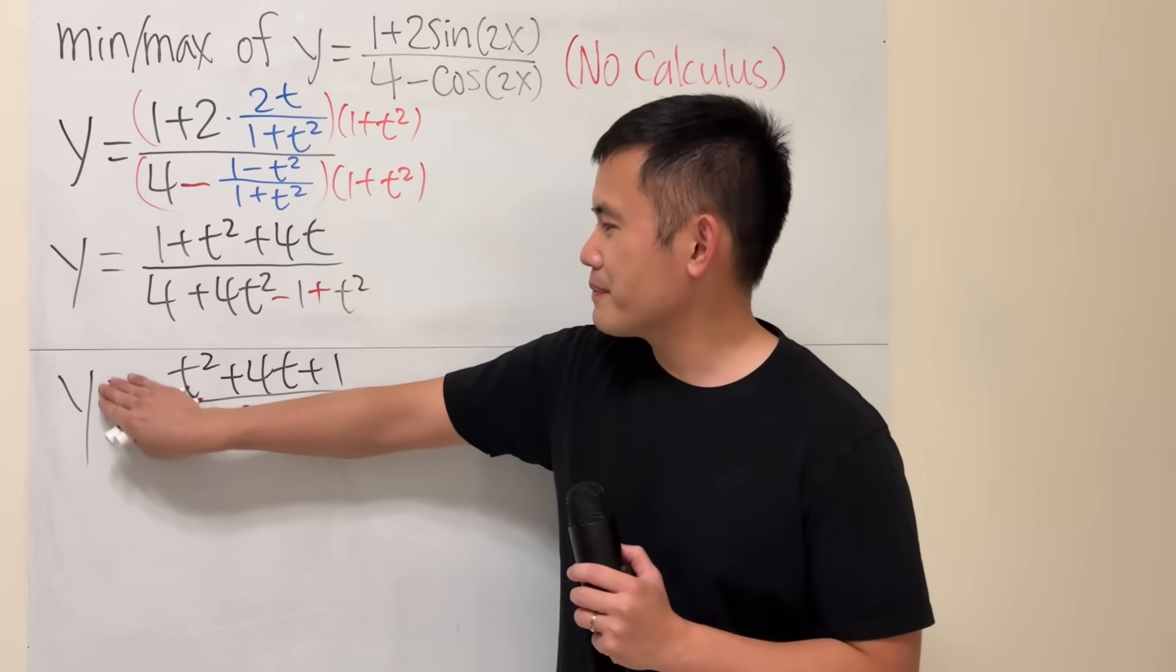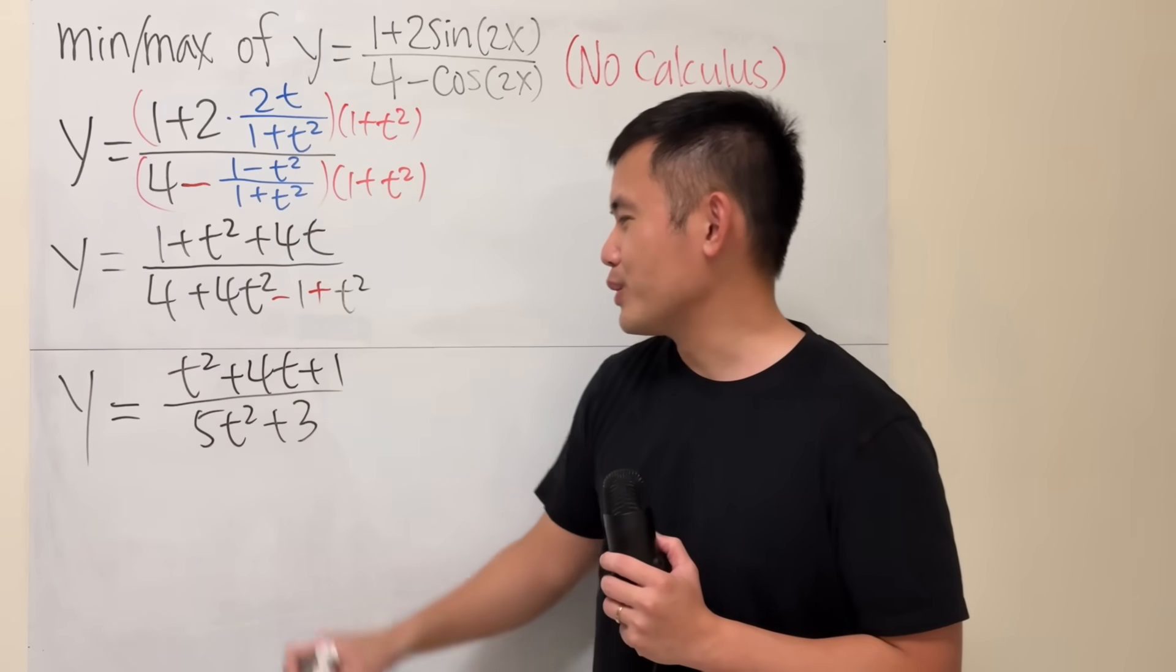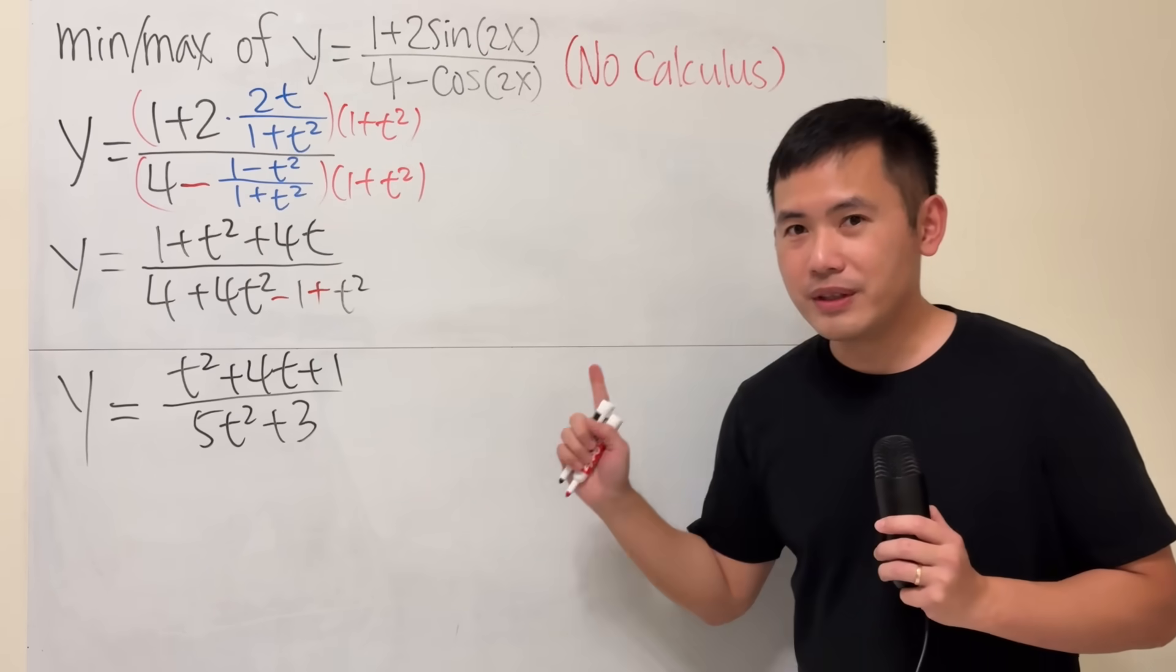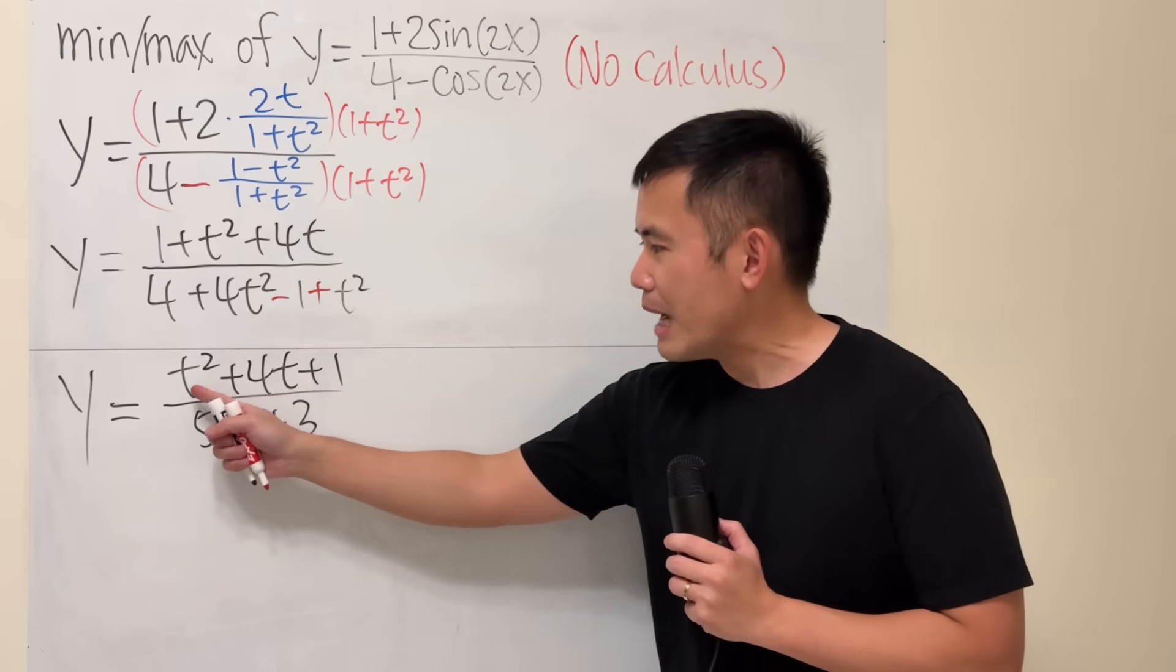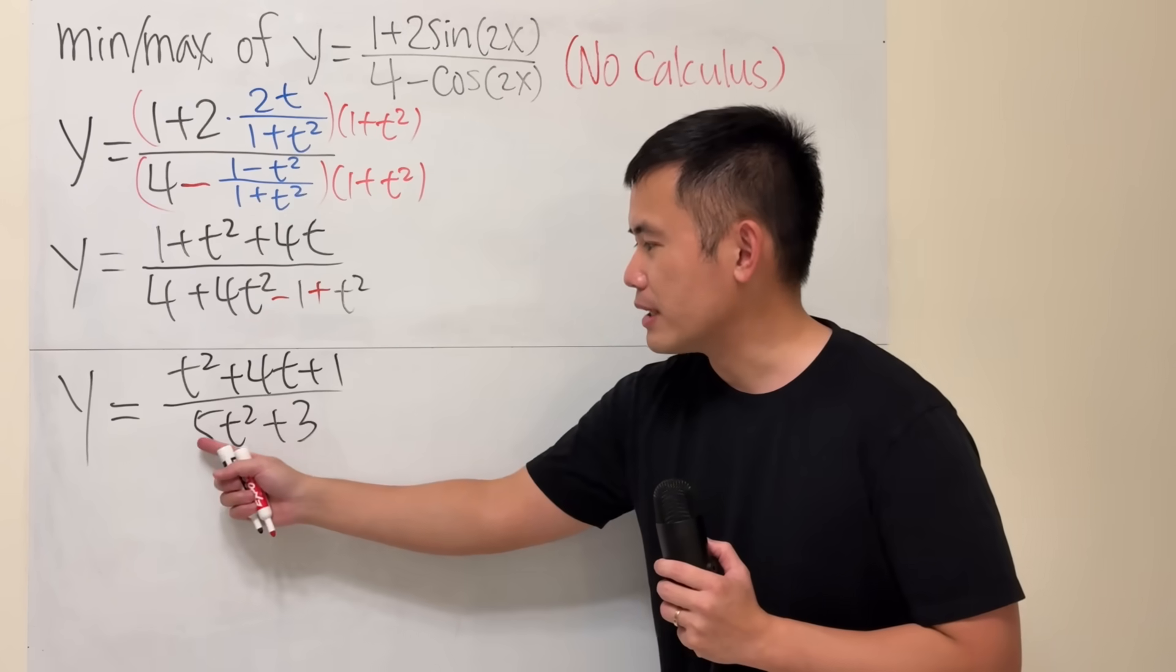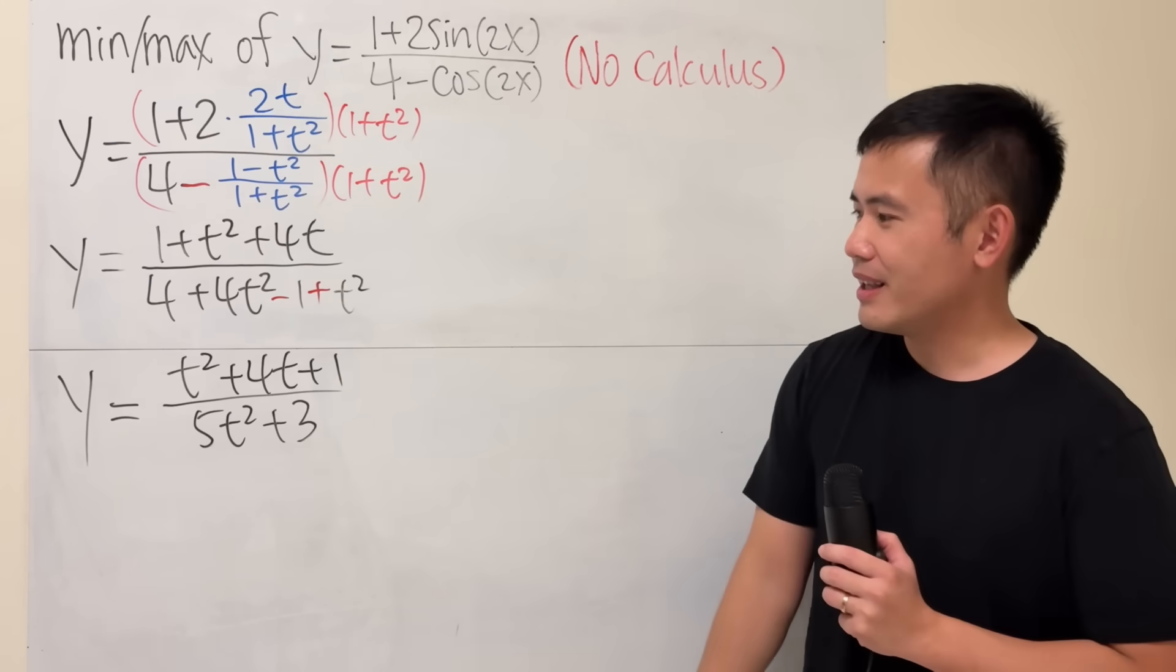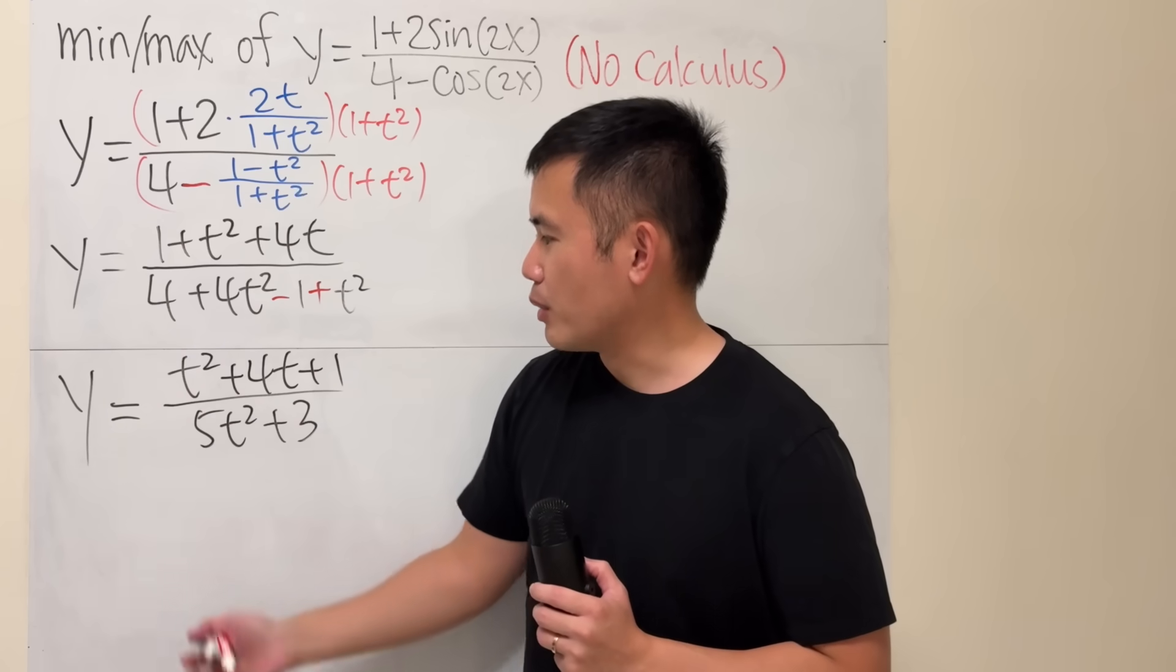So, y is equal to this. And this is still a pretty hard question. I still don't want to take any derivatives. How can we do it though? Well, the good thing for this rational function is that the top is just a quadratic. Likewise, the bottom is also a quadratic. So, we can try the following. I'm going to be multiplying this to both sides. So,